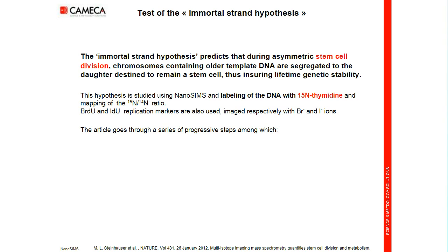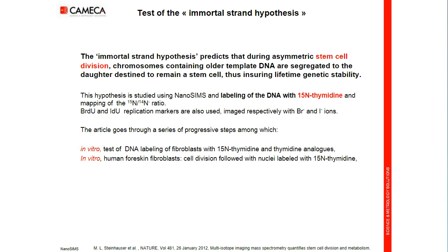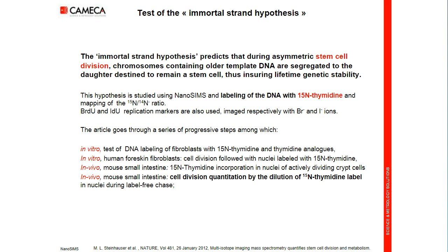There are a series of progressive steps in the article. First, the test of DNA labeling of fibroblasts in vitro. Then cell division followed with nuclei labeled with nitrogen-15 thymidine in vitro. Then in vivo on mouse small intestine, nitrogen-15 thymidine incorporation in nuclei of actively dividing crypt cells. Then cell division and quantitation through the dilution of nitrogen-15 thymidine label during the label-free chase. And finally, the test of the Immortal Strand Hypothesis.